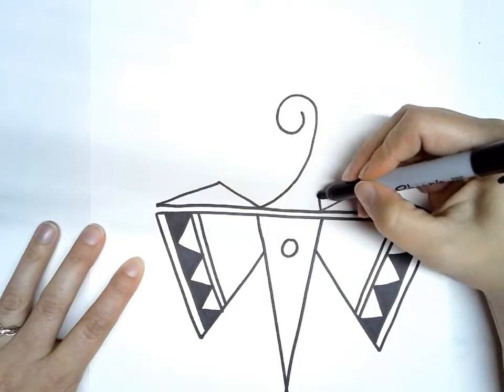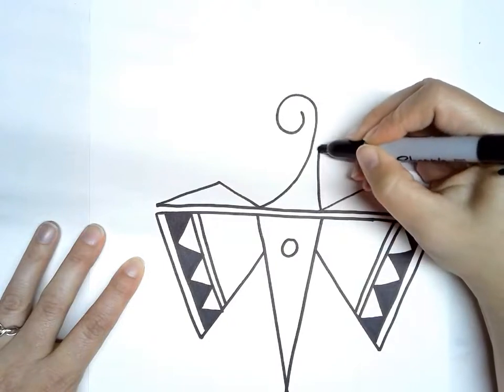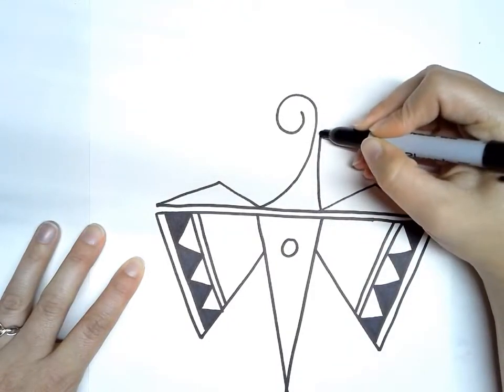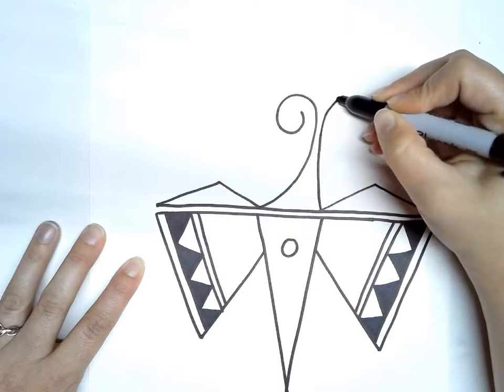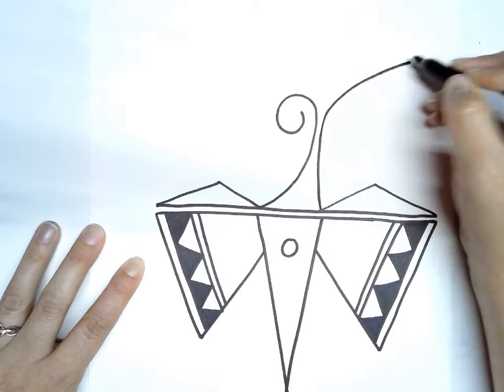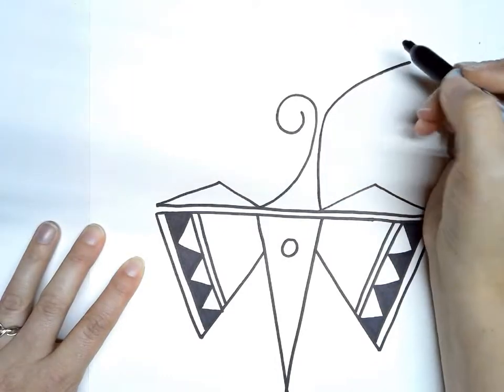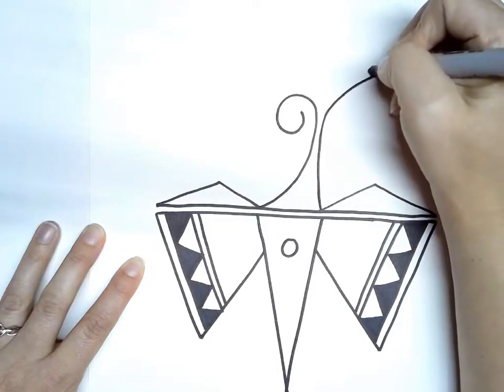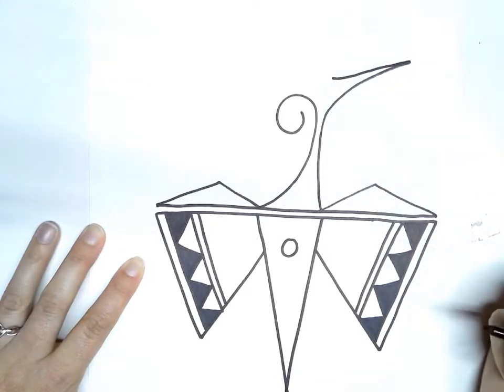And then we're going to draw a line that curves up and almost touches here in the middle but doesn't quite. And then it's going to come out and it's going to have like a point on the end. So it's going to come back in like that.